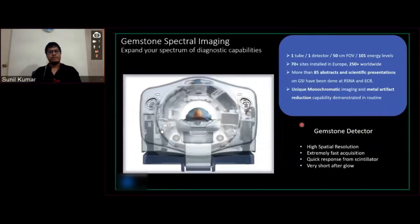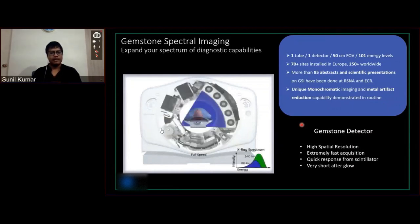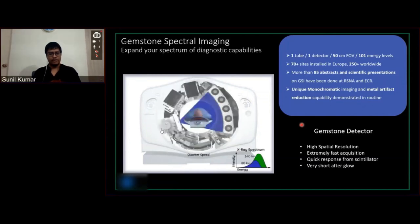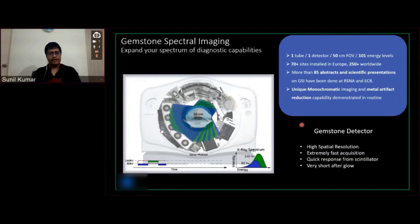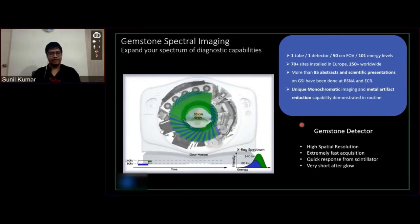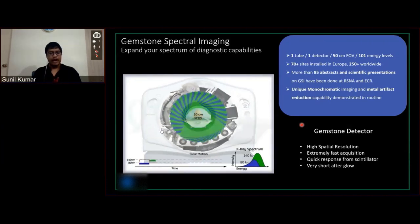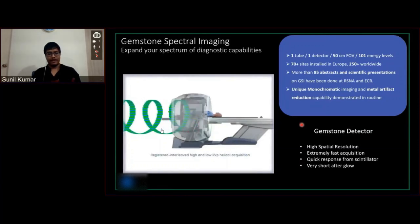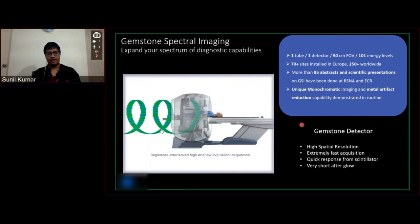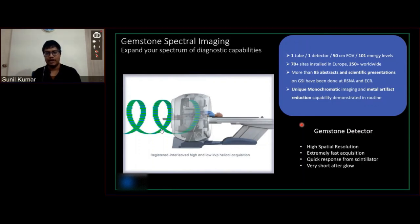The video running on screen shows how fast kV switching happens: the tube switches multiple times from 80 kV to 140 kV in one single rotation, with a delay of 0.25 milliseconds. We get interleaved high and low projections in a helical acquisition. Since we are so fast in acquiring, there's no extra dose for the patient and scan time remains the same — no increase in scan time, no increase in radiation dose. The spectral detector has high spatial resolution, one of the game changers of this technology in GE.